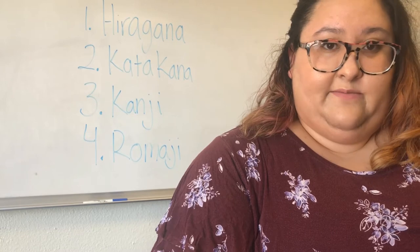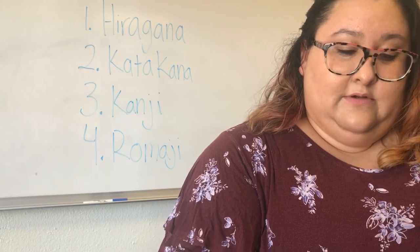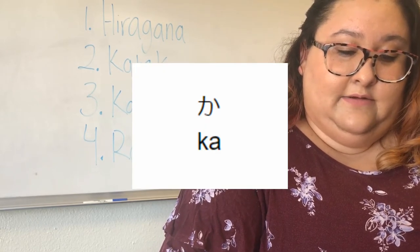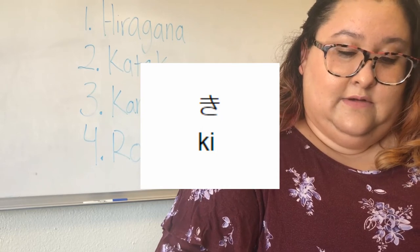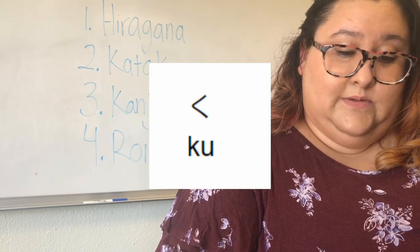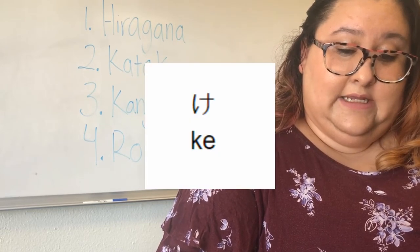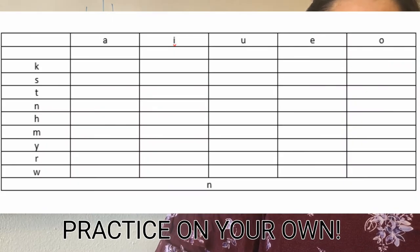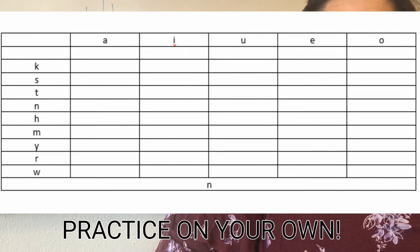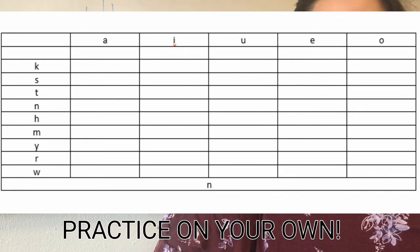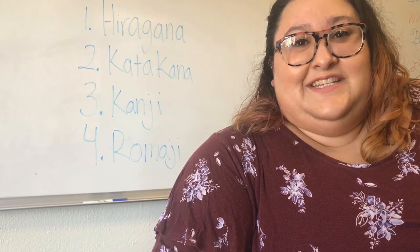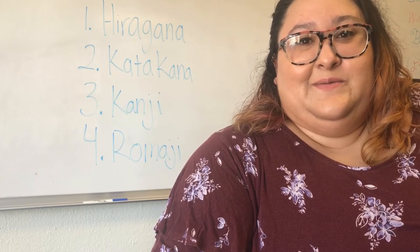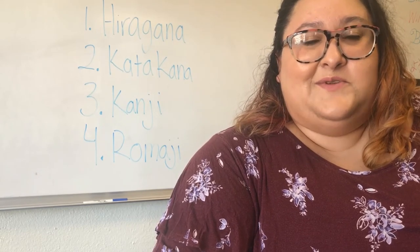For example: ka, ke, ku, ki, and ko. Practice the rest of these sounds on your own using s, t, n, and so forth, and your pronunciation will be almost perfect.